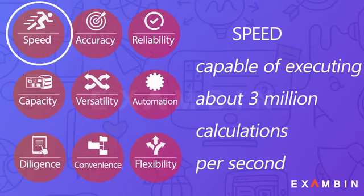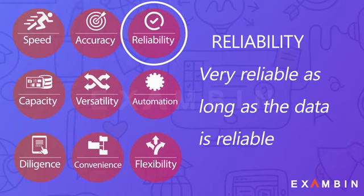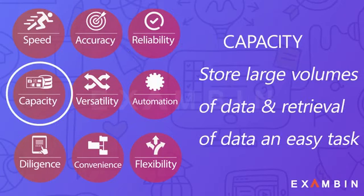Let us know the characteristics of computers. Number one — Speed: computers are powerful and capable of executing millions of instructions per second. Number two — Accuracy: a computer's accuracy is consistently high; if there are errors, they are due to errors in instructions given by the programmer. Number three — Reliability: the output generated by the computer is very reliable as long as the data is reliable.